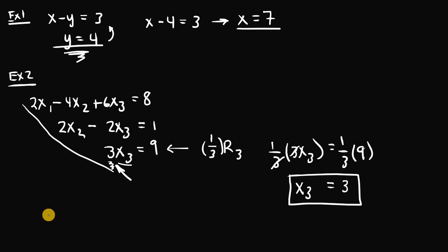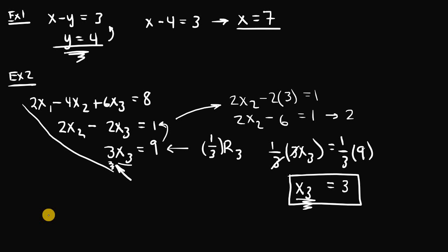Although this system is not in row echelon form, we can still use back substitution to solve for x1 and x2. Plugging x3 equals three into the second equation gives 2x2 minus 2 times three equals one, so 2x2 minus 6 equals one. Adding 6 to both sides gives 2x2 equals seven, and dividing by two gives x2 equal to seven over two.